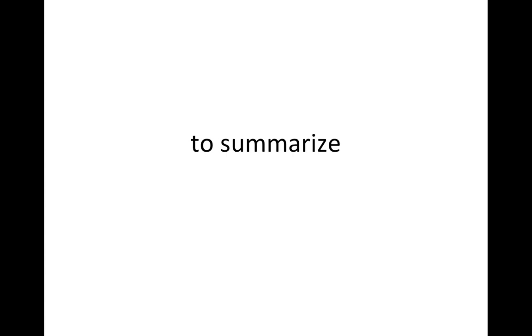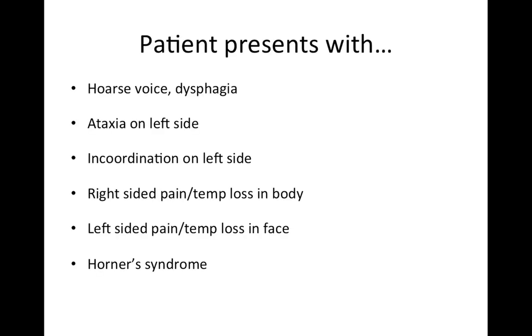Okay, so now let's go back to our clinical picture. So again, our patient had hoarse voice dysphagia. Well, that's because of involvement of nucleus ambiguus, cranial nerve 9 and 10. Our patient had ataxia on the left side. Well, that's because we've infarcted our spinocerebellar fibers. The patient had incoordination on the left side. That's involvement of the vestibular nucleus.